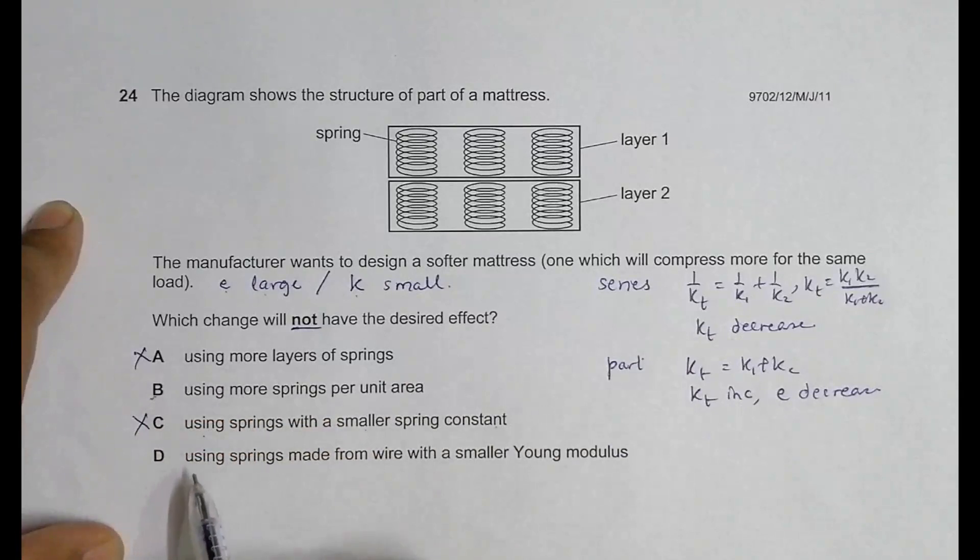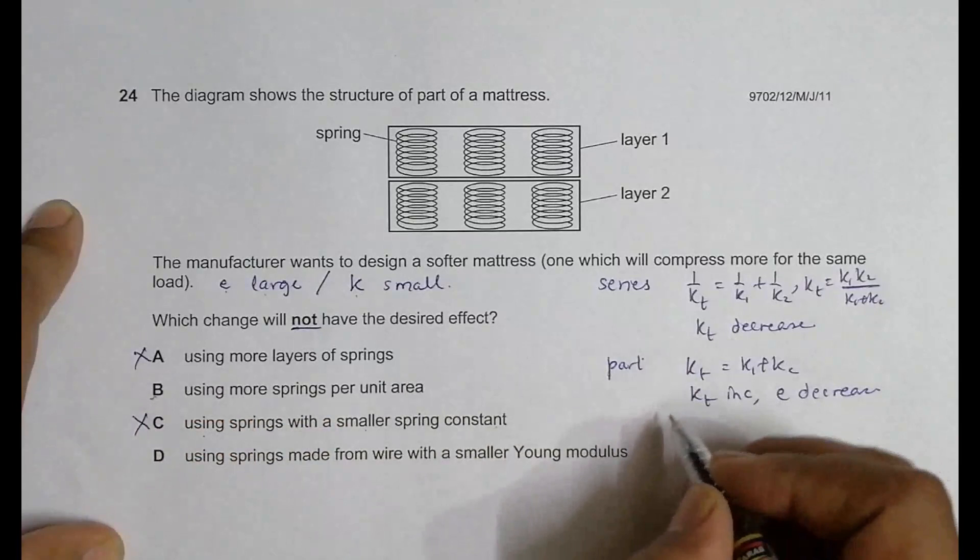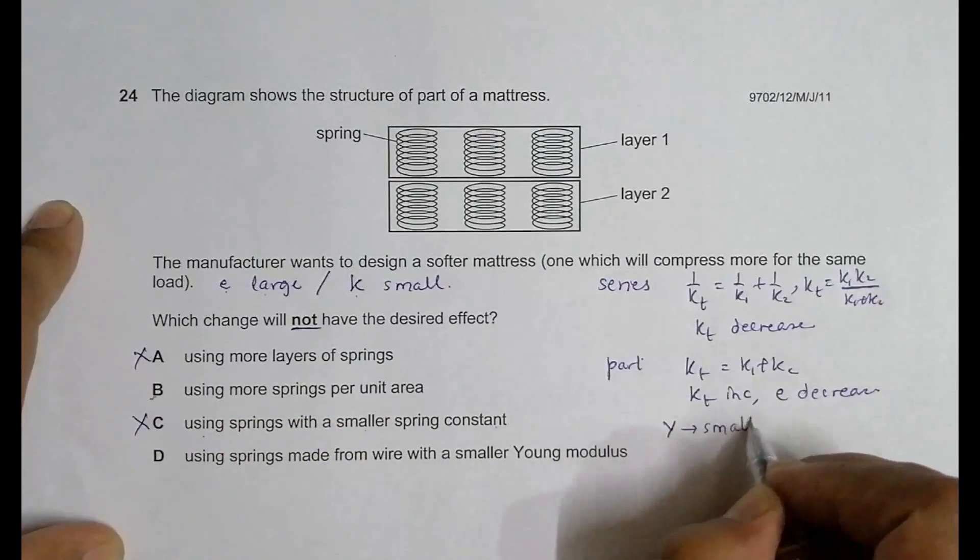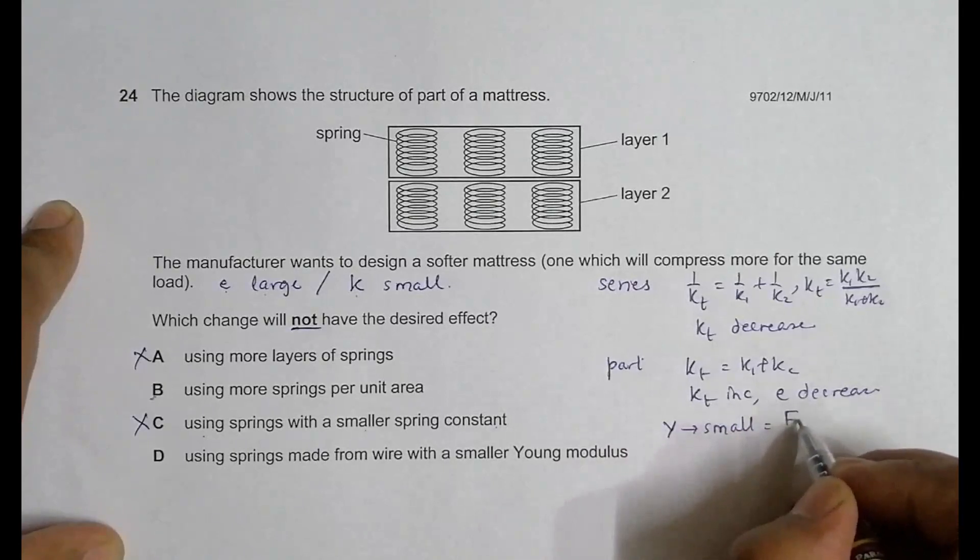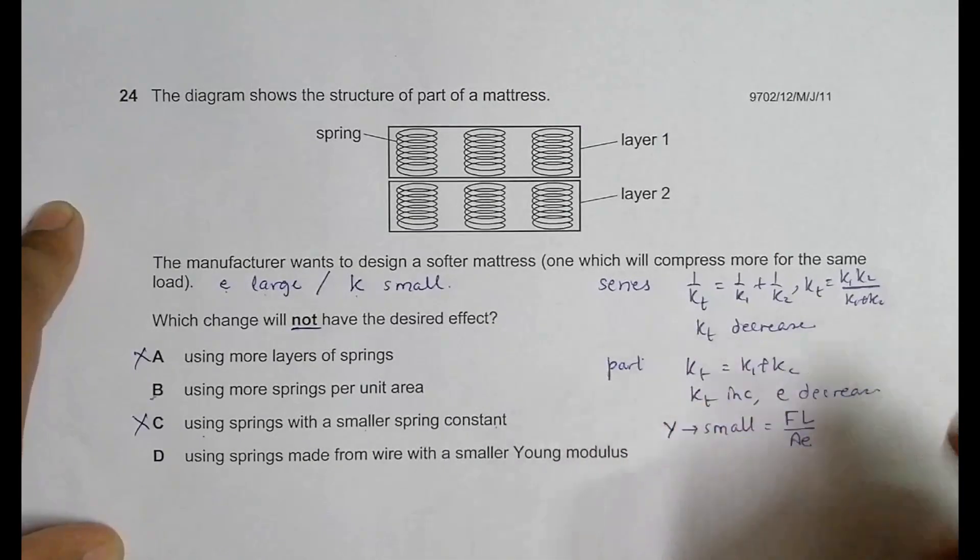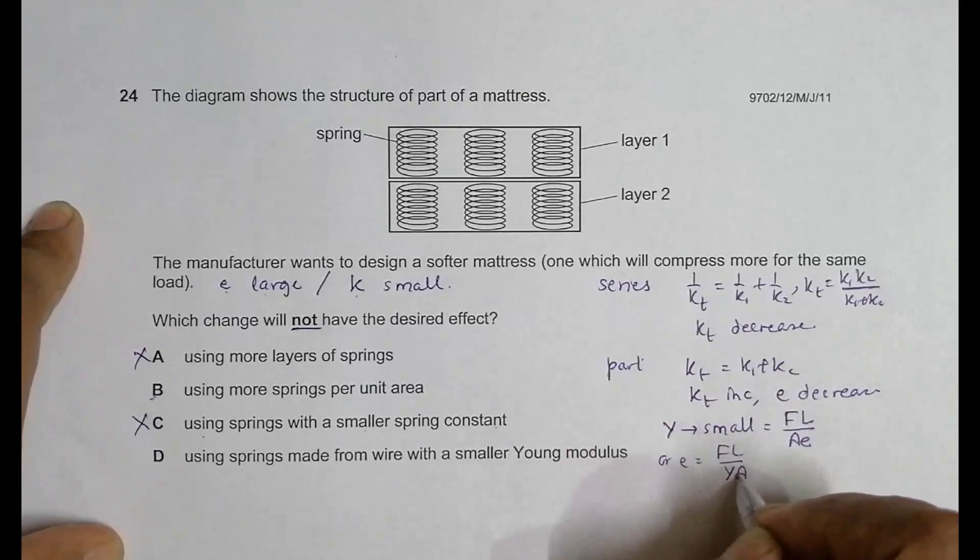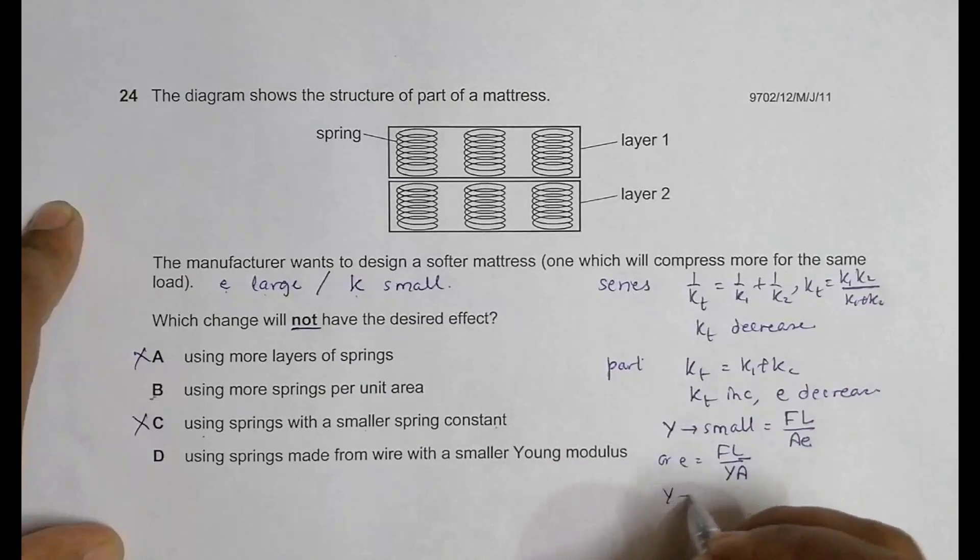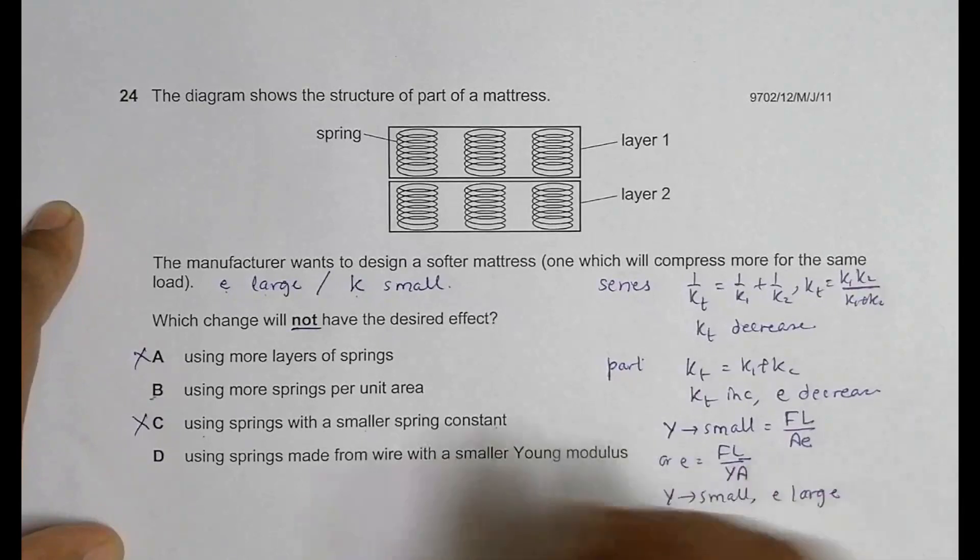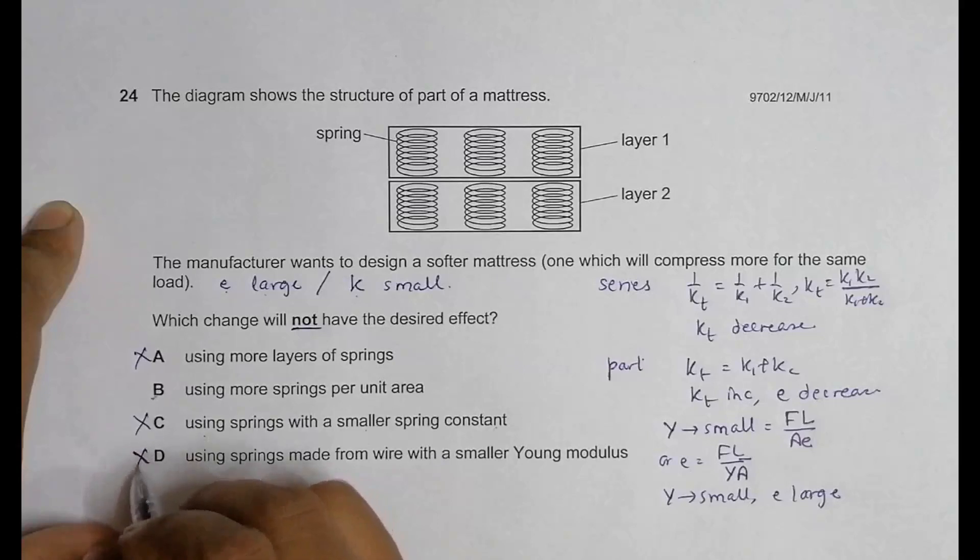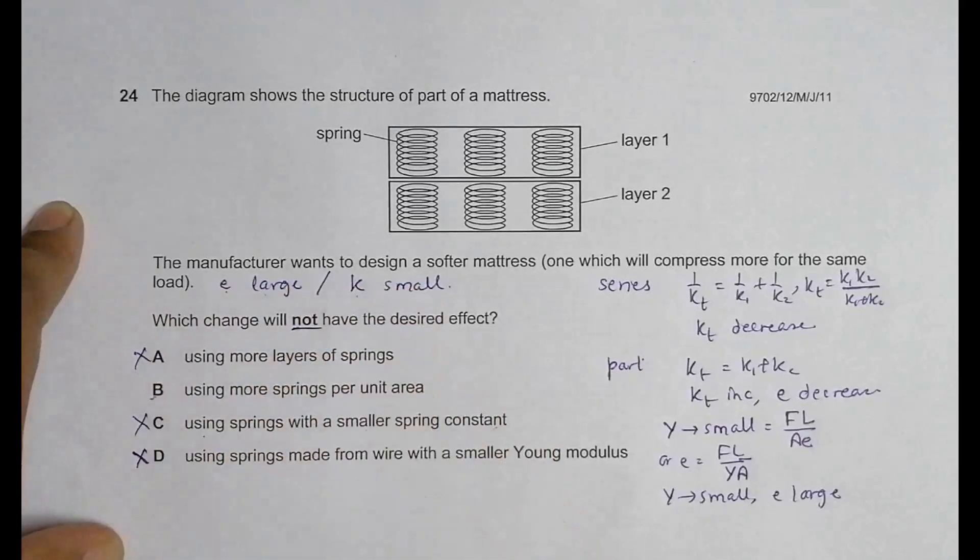Option D: using springs made from wire with a smaller Young's modulus. If Y is small, then Y = stress/strain = FL/AE, which gives E = FL/YA. If Y is small, we'll have E is large. This is not the answer because the answer requires E is small and k is large. E small and k large is only choice B.